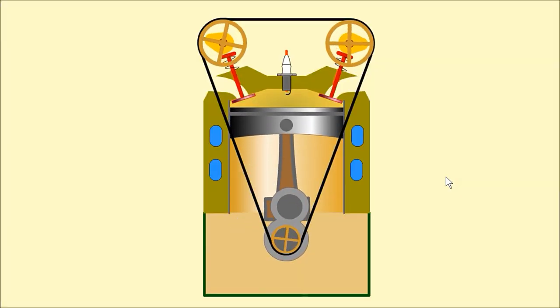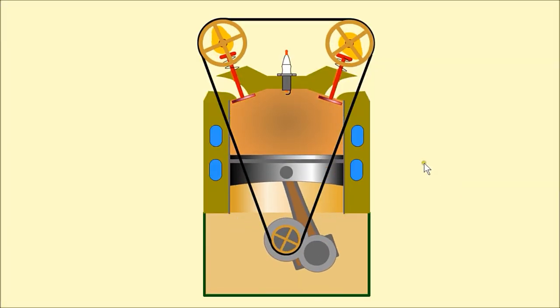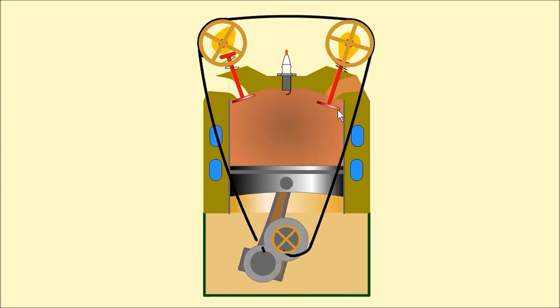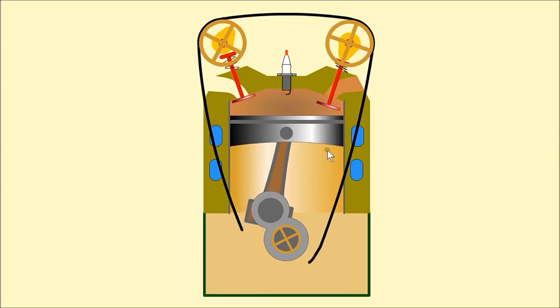With an interference engine, the valves extend into the path of the piston. If the timing belt breaks, it will result in damage to the valves.